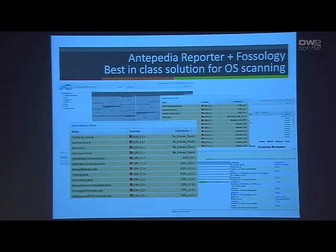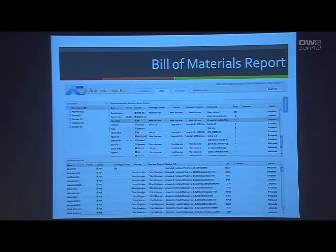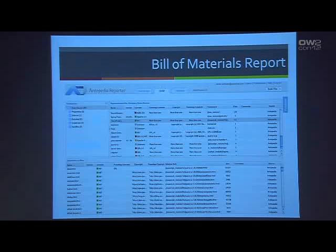It gives a bit more detail on the license information and potential vulnerabilities. Once you get into Antepedia Reporter, one of the first pages you'll see is the Bill of Materials report. The Bill of Materials brings in the information that was just scanned — components and their dependencies — and specifies them into separate categories: open source, proprietary software, your internal software, and an undefined area for things not found in Antepedia or Fossology.